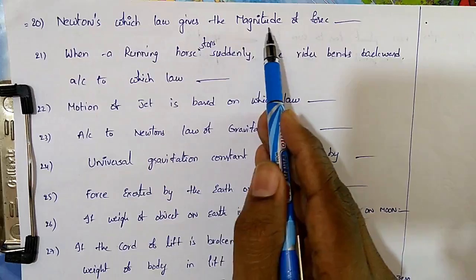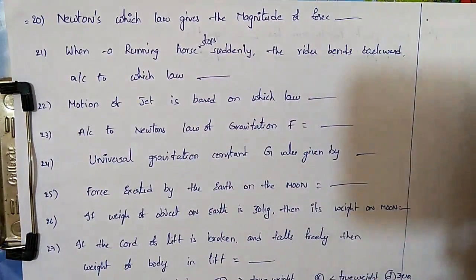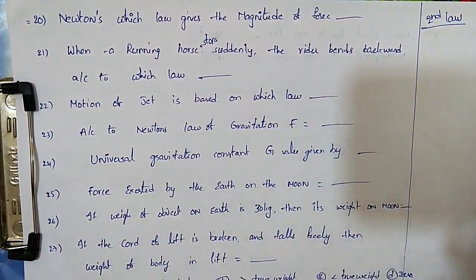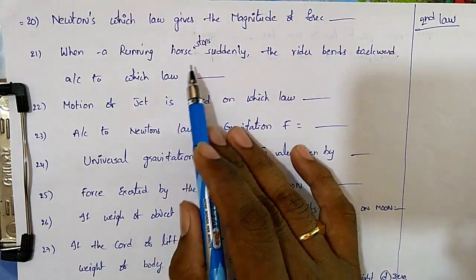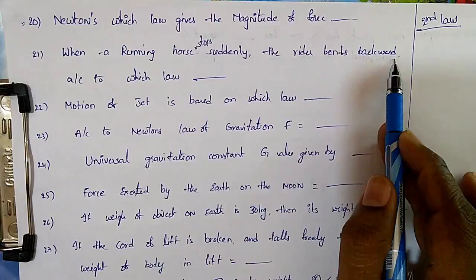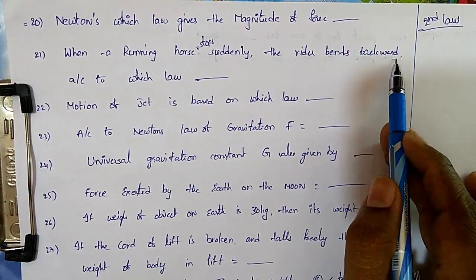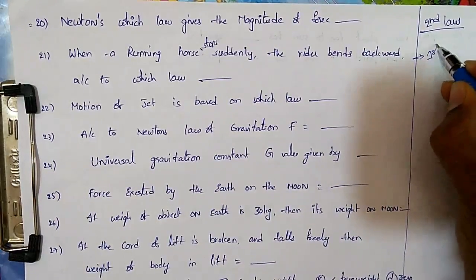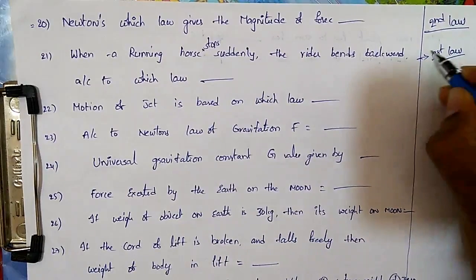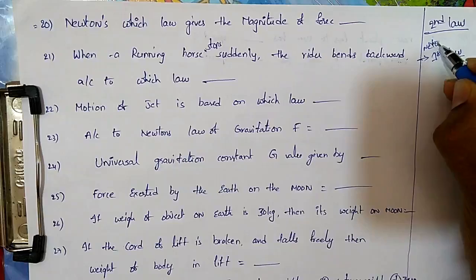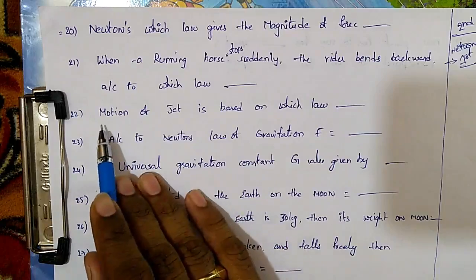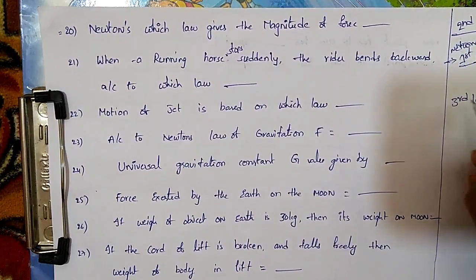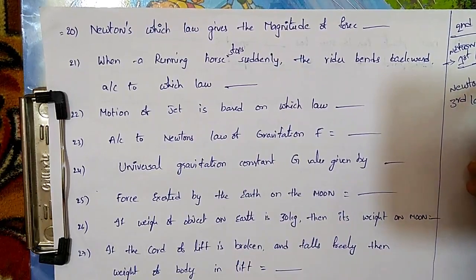Newton's second law gives the magnitude of force. When a running horse stops suddenly and the rider bends backward, this is an example of Newton's first law — the law of inertia. The motion of a jet is based on Newton's third law.